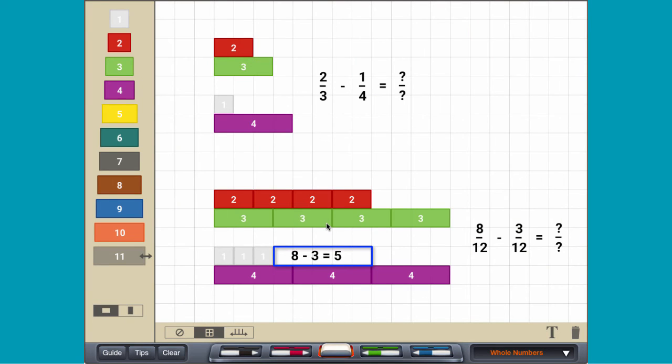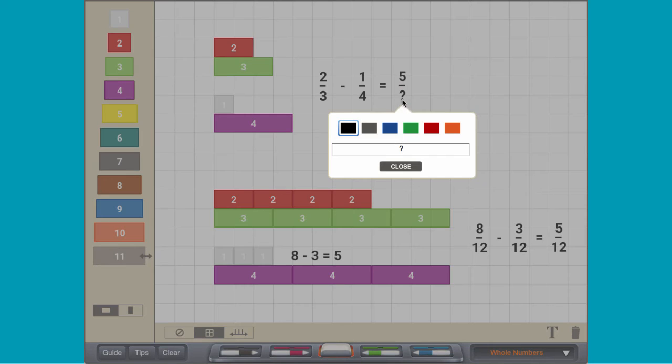There are five parts remaining, so two-thirds minus one-quarter equals five-twelfths.